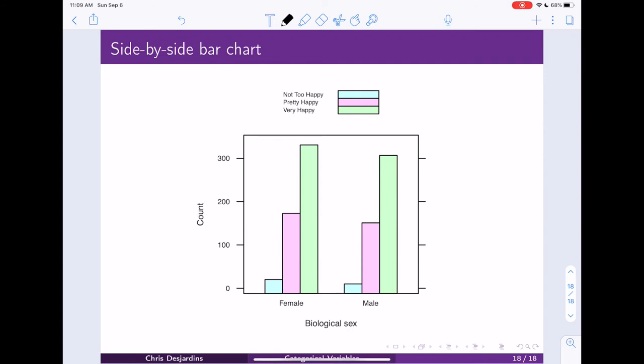An alternative to using a segmented or a stacked bar chart is to use a side-by-side bar chart. And again, here we see the categories, but rather than being on top of one another, they're side-by-side.